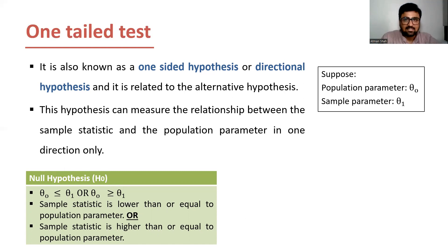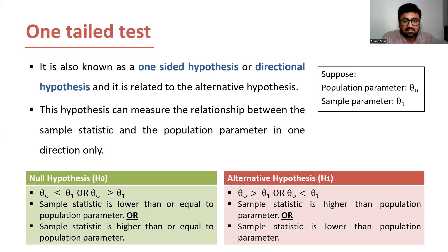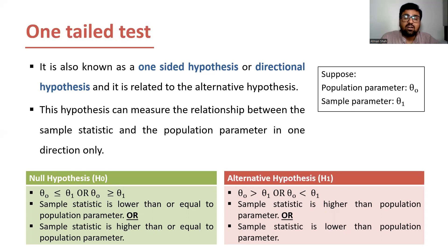In sentence form: the sample statistic is lower than or equal to the population parameter, or the sample statistic is higher than or equal to the population parameter. On the other hand, the alternative hypothesis says that theta 0 is greater than theta 1, or theta 0 is less than theta 1 — meaning the sample statistic is higher than the population parameter or the sample statistic is lower than the population parameter. So we are measuring the relationship in one direction only.